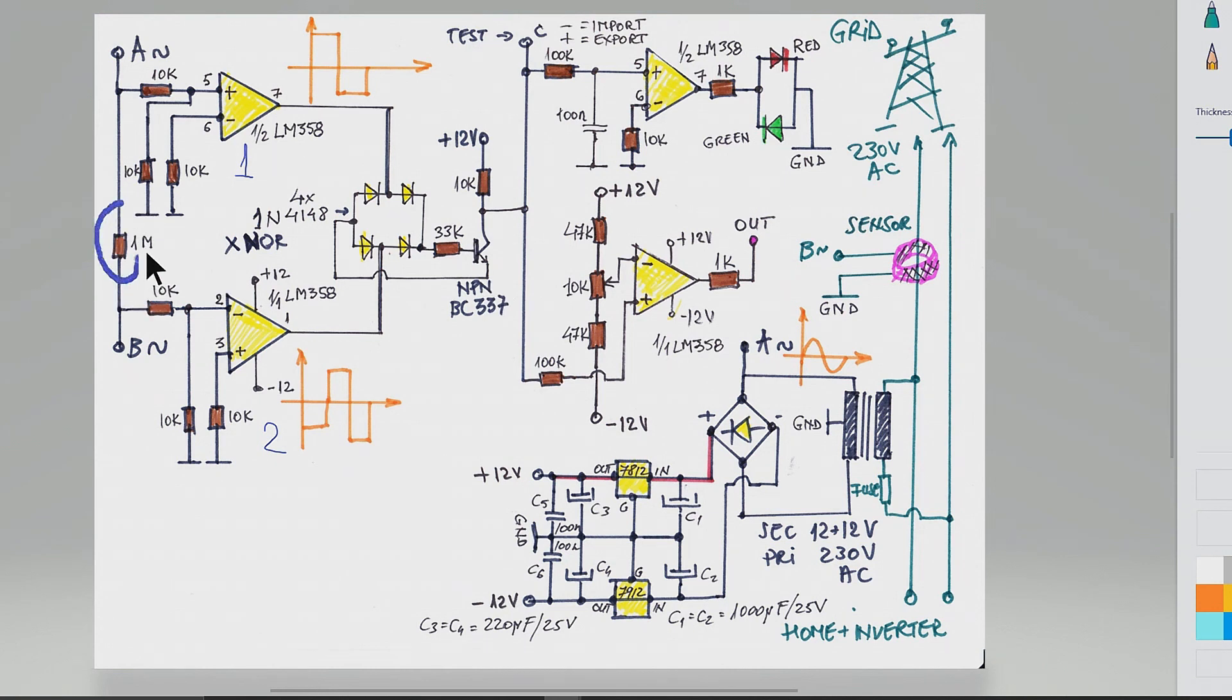Here in the input, I forgot to tell you, the non-inverting and the inverting input are connected through one megaohm resistor. That keeps a kind of balance between the inputs. The whole job is done by this XNOR logic gate. This makes the comparison between the phases and between the outputs of this IC over here.